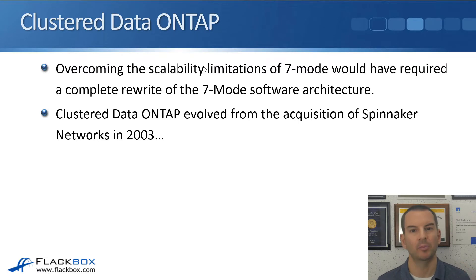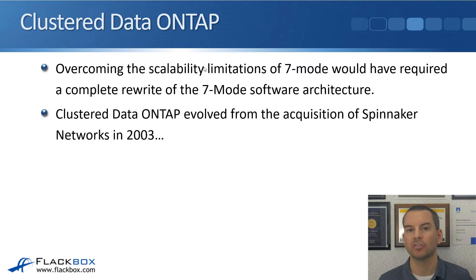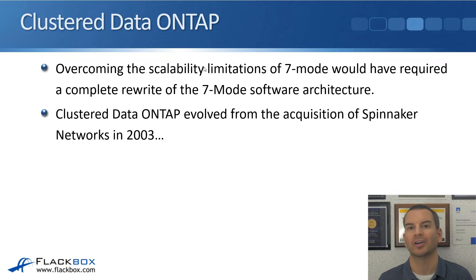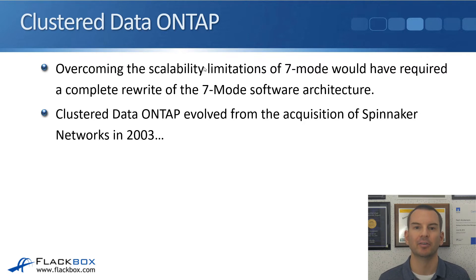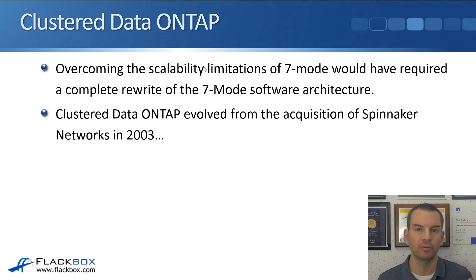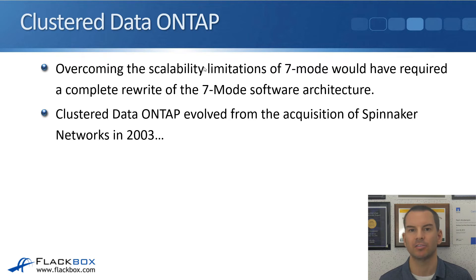Several years ago, NetApp were aware of the scalability limitations they had with the seven-mode operating system. They had a couple of choices: they could either redevelop the seven-mode operating system to overcome those limitations, or go out and buy another company. Upgrading seven-mode would have required a complete rewrite, so it made more sense to do an acquisition. They acquired Spinnaker Networks in 2003, and with that they got their clustered storage operating system capability.